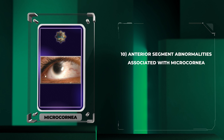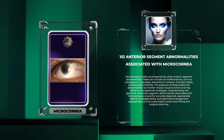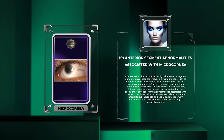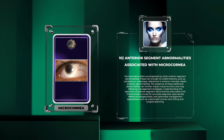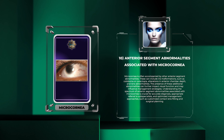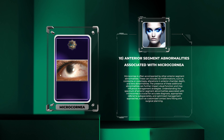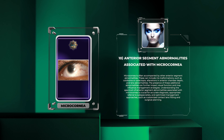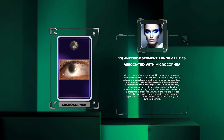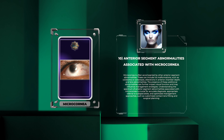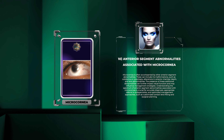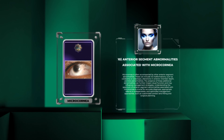Microcornea is often accompanied by other anterior segment abnormalities. These can include iris malformations such as coloboma or corectopia, alterations in anterior chamber depth, and lens abnormalities. The presence of these additional abnormalities can further impact visual function and may influence management strategies. Understanding the spectrum of anterior segment abnormalities associated with microcornea is crucial for accurate diagnosis, appropriate referral to subspecialists, and optimized management approaches such as customized contact lens fitting and surgical planning.